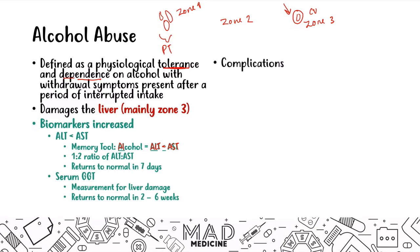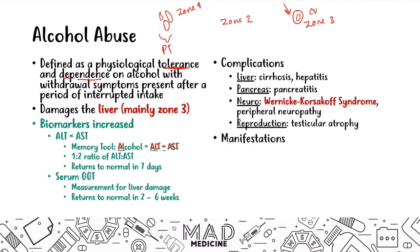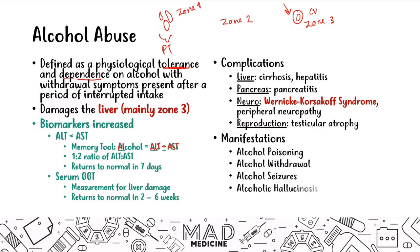When it comes to complications: in the liver you'll have cirrhosis and hepatitis. The pancreas is at higher risk for pancreatitis. Neural symptoms include Wernicke-Korsakoff syndrome and peripheral neuropathy. In the reproductive system, testicular atrophy can occur. Alcohol abuse can also manifest as alcohol poisoning, withdrawals, seizures, hallucinations, and the feared sequela — delirium tremens. All of this is very high yield for Step 1.